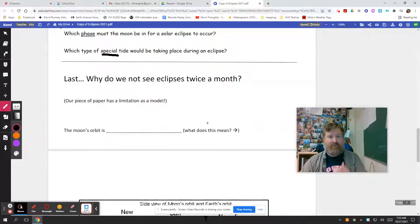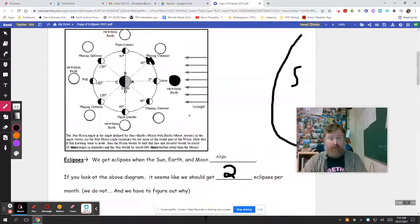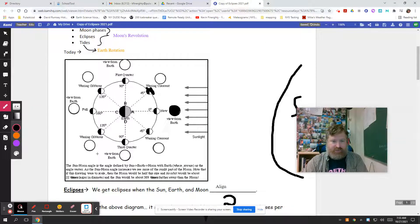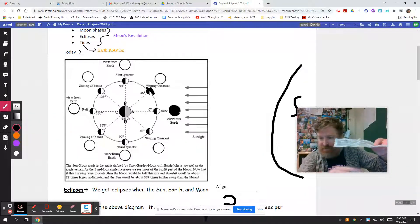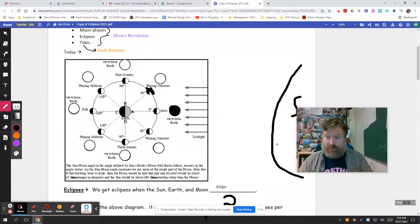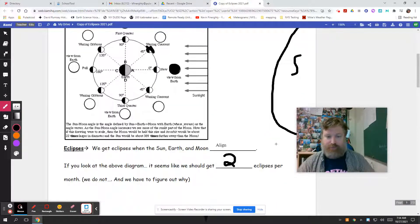So lastly, why do we not see eclipses twice a month? It's because our piece of paper, granted our computer screen, has a limitation as a model. If I throw this at you, it makes it seem like eclipse, eclipse, eclipse, eclipse. But there's a limit to this, and it's that it's two-dimensional. Here's a piece of paper and it has no depth. Really, here in the solar system, it's three-dimensional, so things don't always line up perfectly.